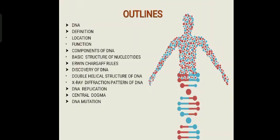In this world, Allah Almighty creates similarities among you, your forefathers — a sacred relation more precious than anything else — and your descendants. As we know, we are going to discuss the DNA model and central dogma. We will cover: definition, location, functions, components of DNA, basic structure of nucleotides, Chargaff's rules, discovery, double helical structure, X-ray diffraction pattern, DNA replication, central dogma, and DNA mutation.